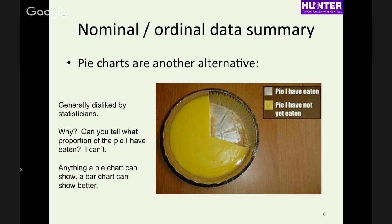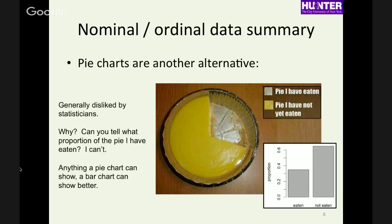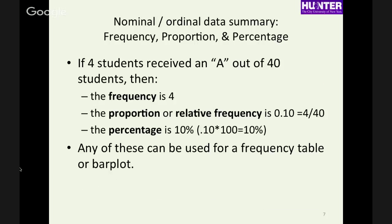With a pie chart, it's hard to tell exactly what proportion is represented — maybe somewhere between 20 and 30 percent. If you make a bar chart instead, it's not as visually stimulating but it's much more quantitative — you can see exactly what proportion is shown. For example, if four students out of 40 got an A, the frequency is 4, the proportion is 0.1, and the percentage is 10 percent.